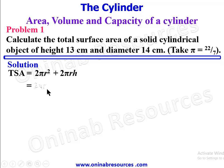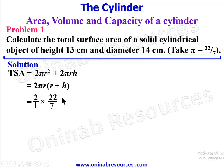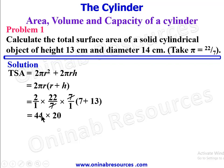Substituting the values: π = 22/7, radius = 14 ÷ 2 = 7. So we have 2 × (22/7) × 7 × (7 + 13). The 7s cancel, giving 44 × 20. 44 × 2 = 88, add the zero: the total surface area is 880 cm².